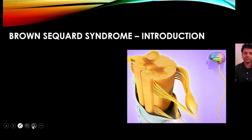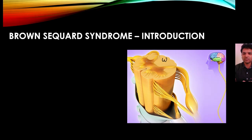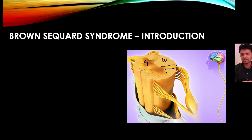This is the cross-section of the spinal cord. The spinal cord is divided into two portions: the outer portion called the white matter and the inner portion called the gray matter. The gray matter has three important parts: the dorsal horn, the lateral horn, and the ventral horn.